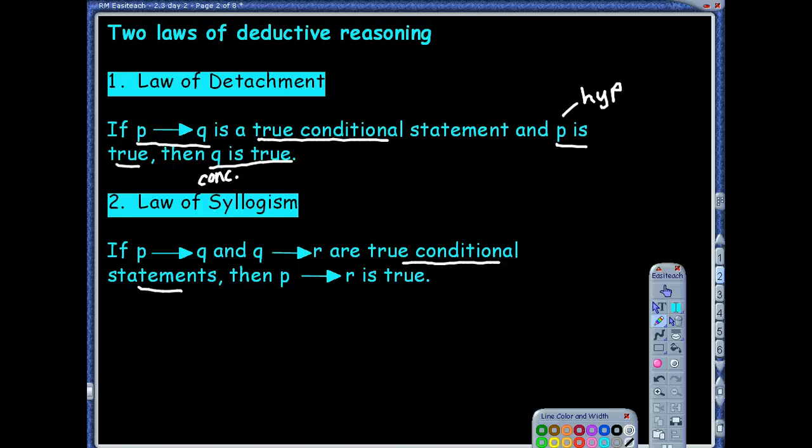But what Mrs. Hoegraby noticed, which is great, and hopefully you guys are seeing this too, is that both of them contain the Q. Notice how this conditional statement, the Q is actually the conclusion, where in this conditional statement, it's the hypothesis. What they're saying, based on this law, is if you have two conditional statements where one ends and the other one begins with that, you can create a whole brand new conditional statement that's also true.